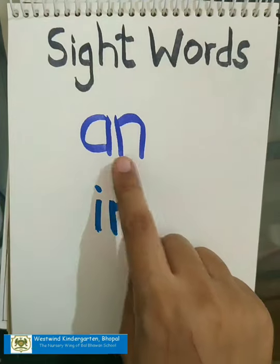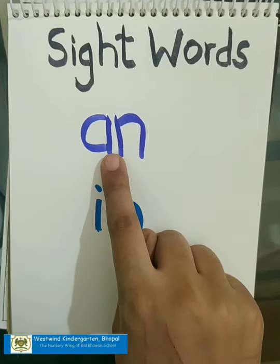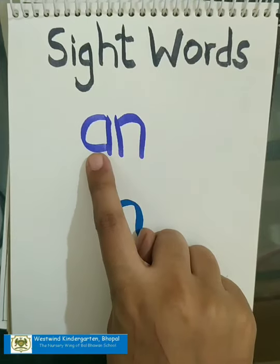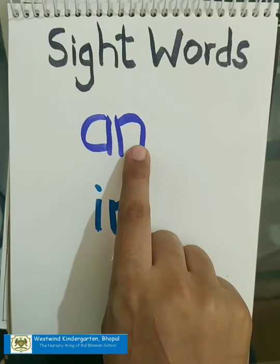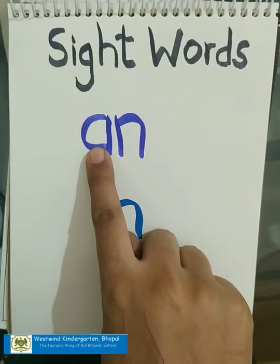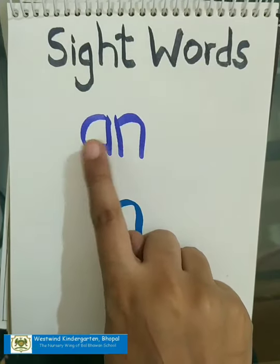Children, can you recall how do we read this two-letter word? Or you can say them as sight words. A, n, an. A, n, an. The sound of letter A is A and the sound of letter N is N. So A, n, an.